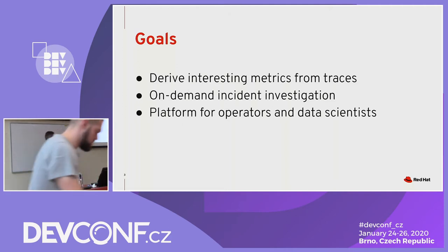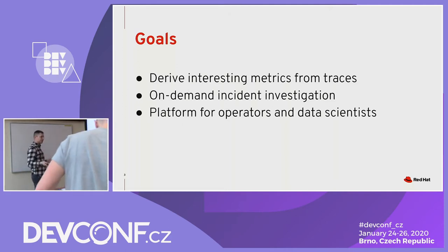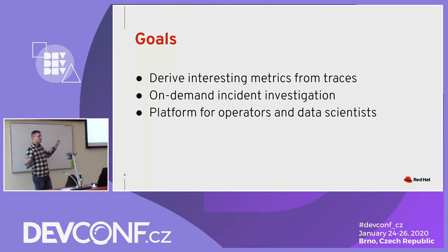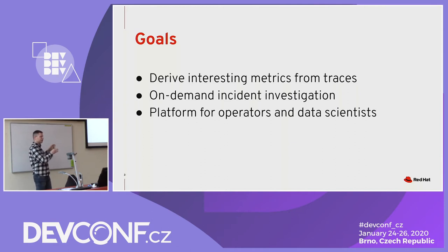Our goal in doing this integration — to allow data science on top of tracing data — is basically to derive more information from traces we collect. Traces contain a lot of rich information: we see the transaction end-to-end and we see everything that happens with a lot of metadata associated to it. You can run these models as part of your standard Jaeger deployment to derive metrics applicable to all of the data you collect.